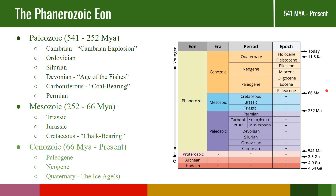We've gone through the Precambrian, so now it is time to go through the Phanerozoic Eon. The Phanerozoic Eon is divided up into three eras: the Paleozoic, the Mesozoic, and the Cenozoic. These eras, in turn, are divided into several different periods, which are important to know, and we will go over each of these periods briefly.